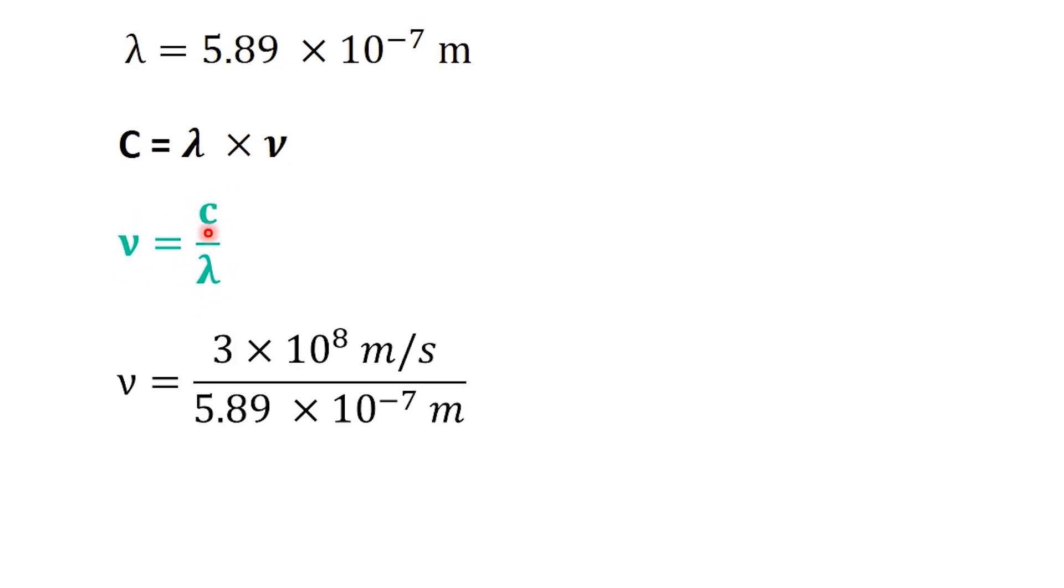Now let's plug in the values. We take 3 times 10 to the power of 8 meters per second and divide it by 5.89 times 10 to the power of negative 7 meters. The meters cancel out, leaving us with nu equals 5.09 times 10 to the power of 14 per second, which we can also say as 5.09 times 10 to the power of 14 hertz, remembering that 1 hertz is the same as 1 second to the power of minus 1.